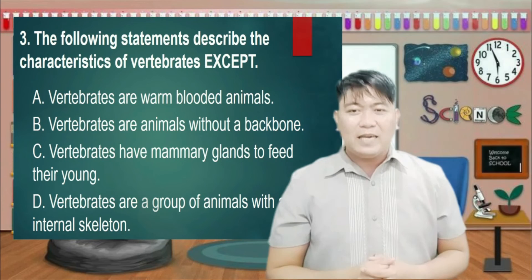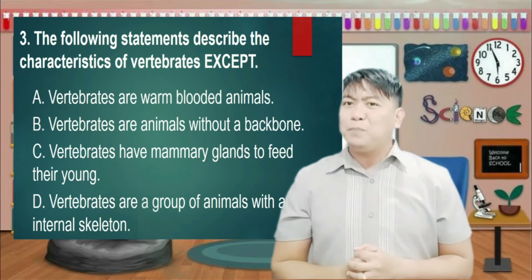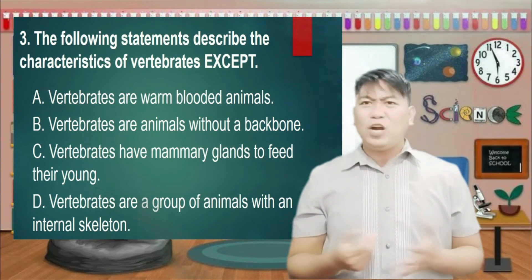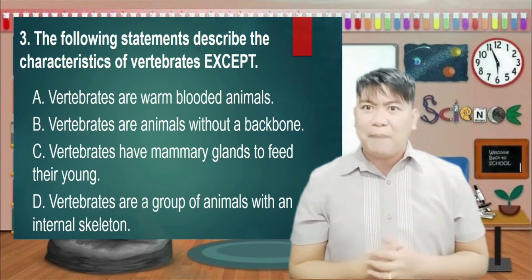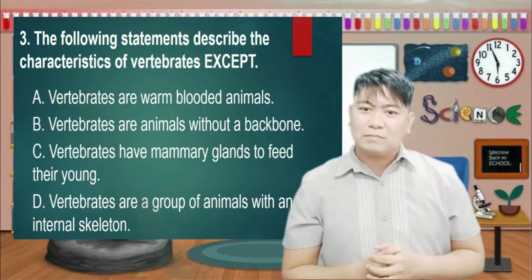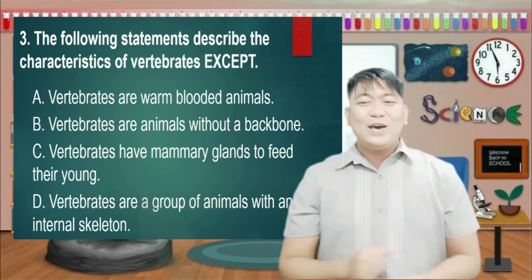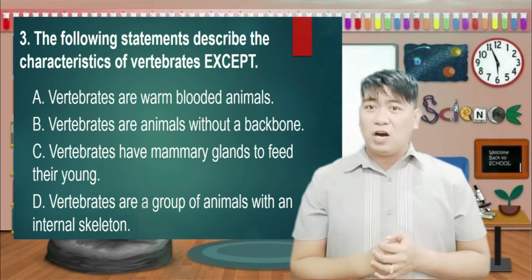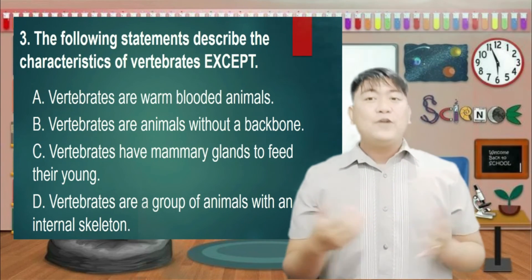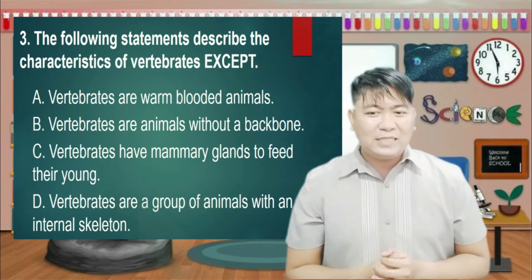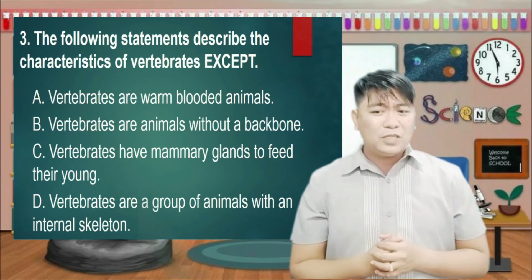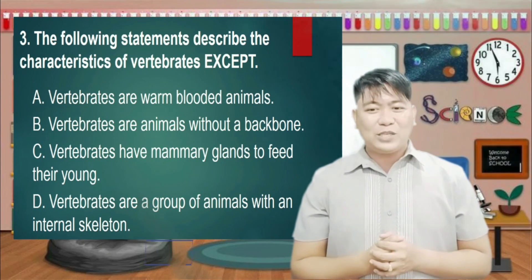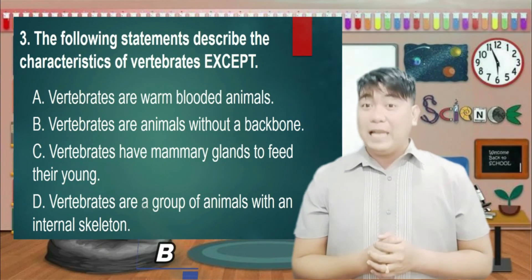Number 3: The following statements describe the characteristics of vertebrates except... A. Vertebrates are warm-blooded animals. B. Vertebrates are animals without a backbone. C. Vertebrates have mammary glands to feed their young. D. Vertebrates are a group of animals with an internal skeleton. And the answer is... Letter B.